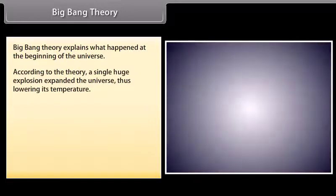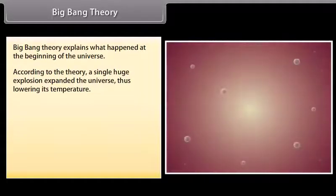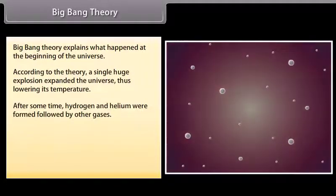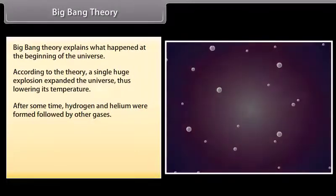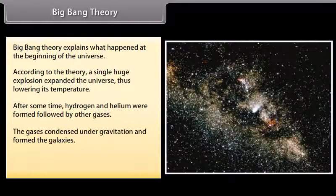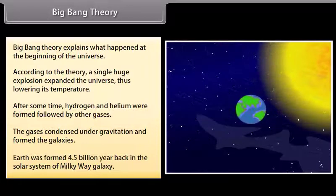Big Bang Theory. Big Bang Theory explains what happened at the beginning of the universe. According to the theory, a single huge explosion expanded the universe thus lowering its temperature. After some time, hydrogen and helium were formed followed by other gases. The gases condensed under gravitation and formed the galaxies. Earth was formed 4.5 billion years back in the solar system of Milky Way Galaxy.